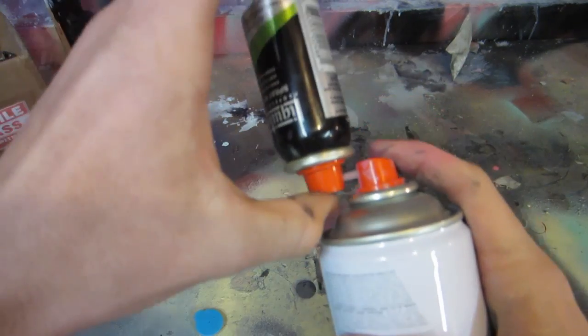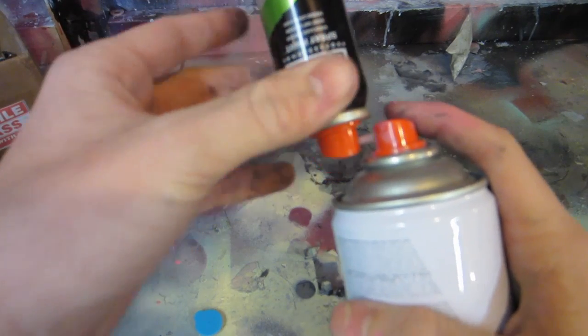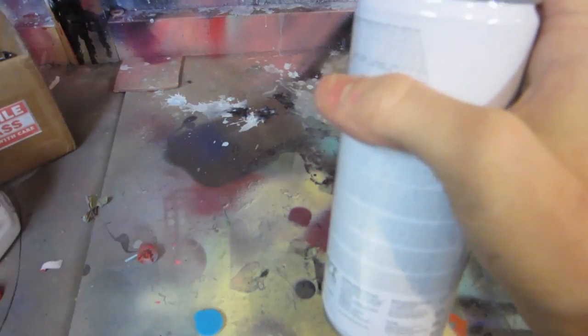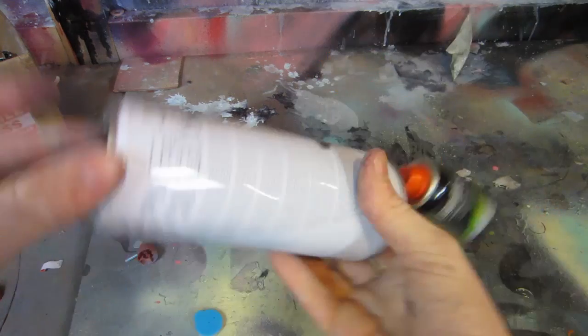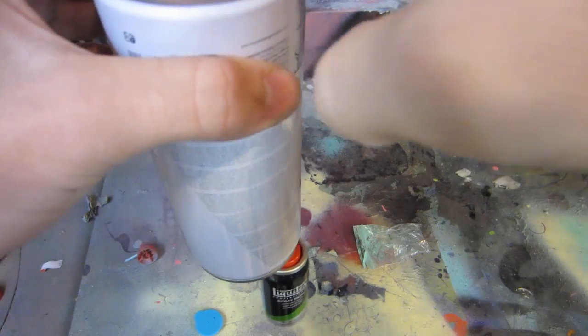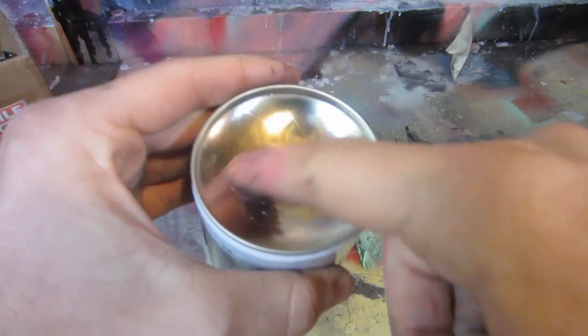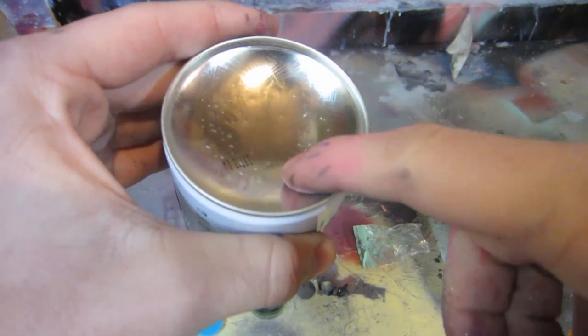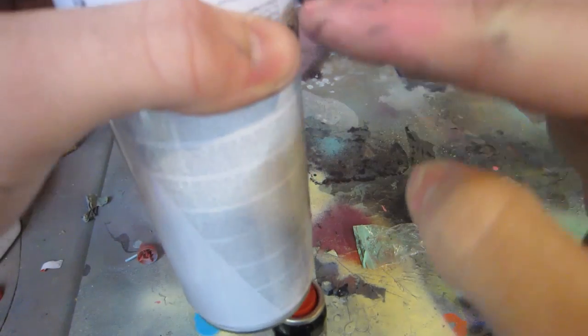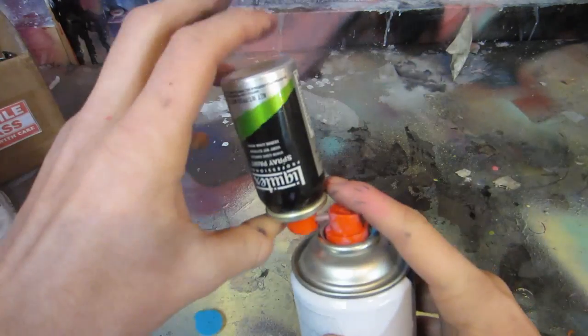And then you're going to want to press down the can you want the paint to go into first. I like to put mine on top as well, so this one's feeding up into it, because if you flip this can over, the straw is on the bottom of the can, which now doesn't have any paint around it because the paint's all settled down. So be sure to have this can on top.